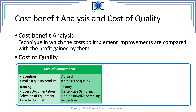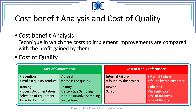For appraisal, we have testing. Sometimes we use destructive sampling — we take a product and verify it but cannot use it anymore. We also have non-destructive sampling where we can measure parameters of a finished product and, if it passes, send it on to be sold. Inspection verifies that equipment is working properly. On the other hand, the cost of non-conformance includes internal failure — found by the project or internally — and external failure, which is found by the customer. Internal failure means rework or scrap; external failure leads to liabilities, warranty work, loss of business, and loss of reputation.